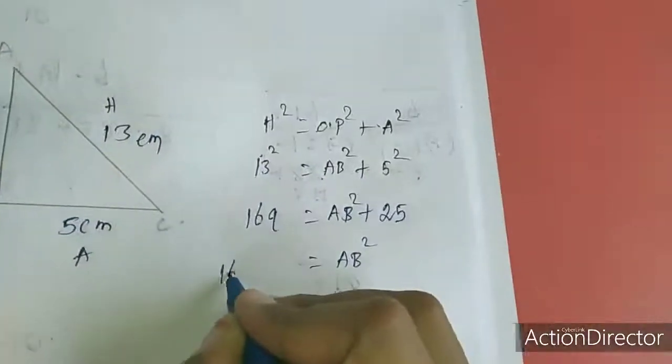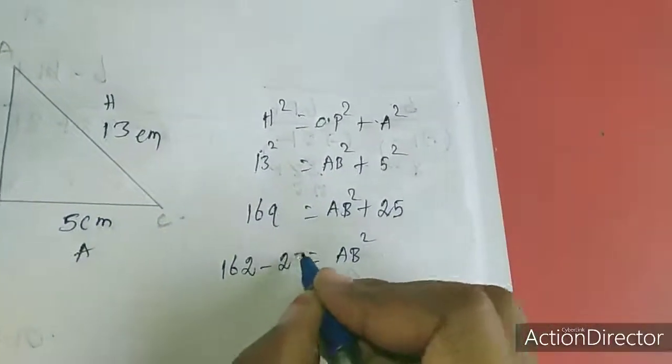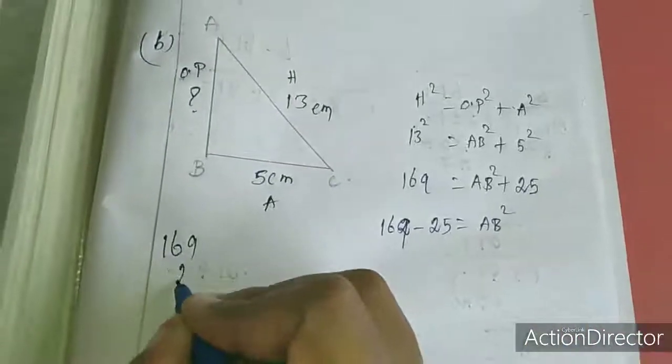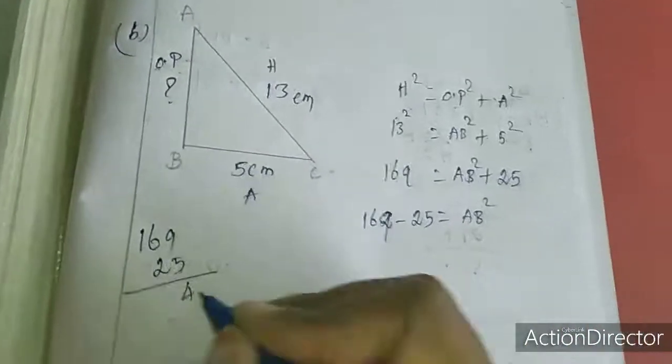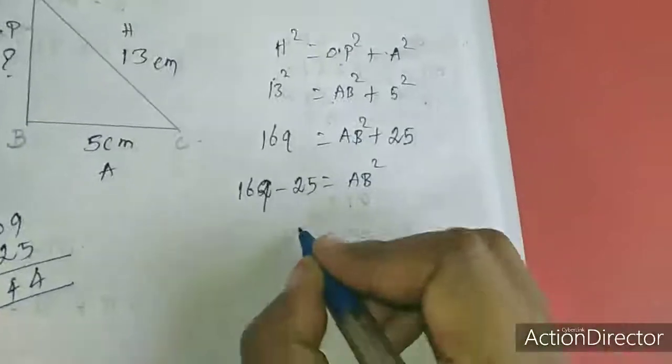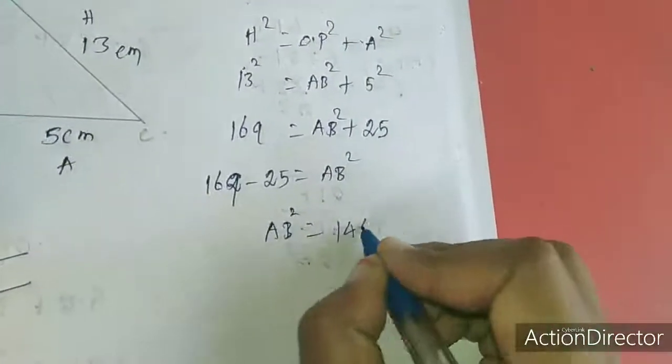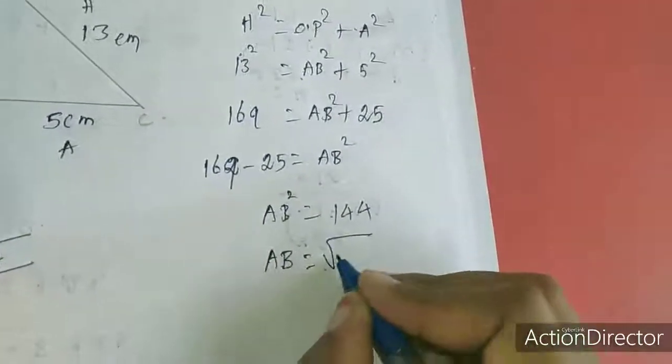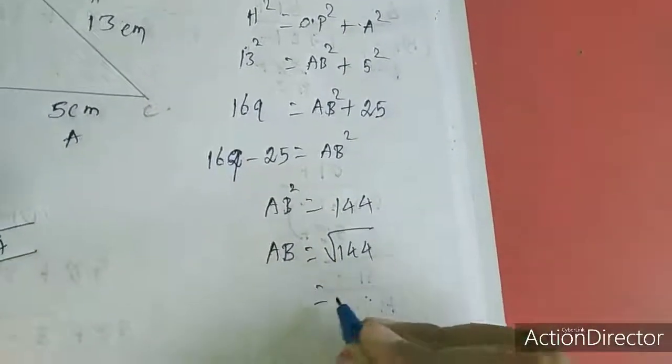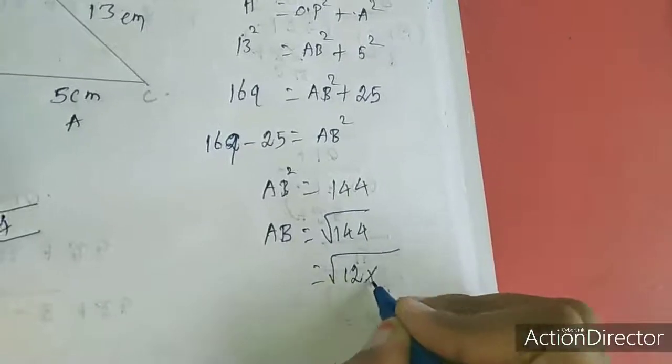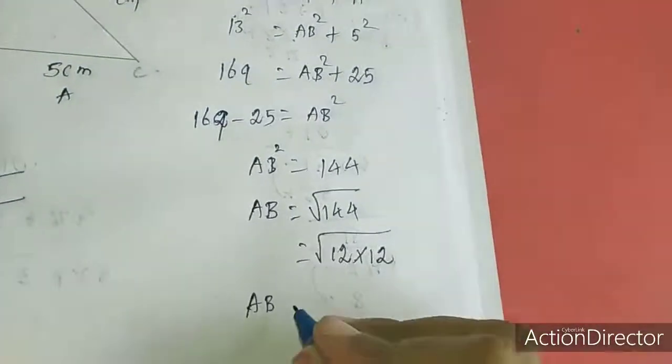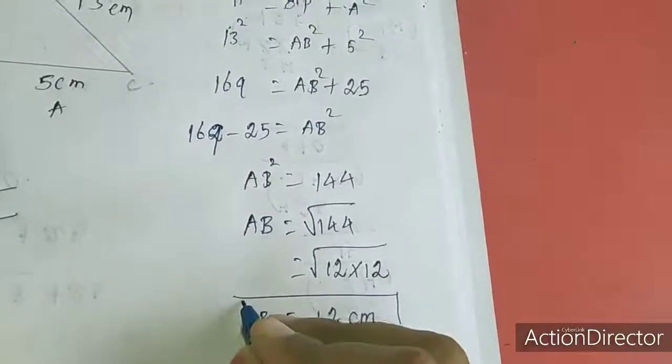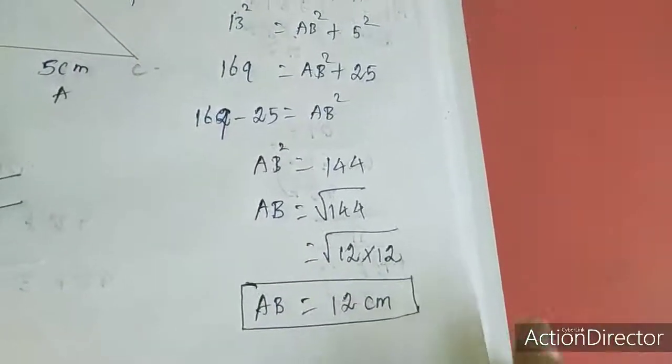So same formula only: hypotenuse squared equal to opposite squared plus adjacent squared. So hypotenuse is 13 squared, opposite we don't know. We need the AB value, AB squared only. So if the plus 25 comes this side means it will come minus 25. So here 9, subtraction, so 4, 4, 1. So AB squared equal to 144. We need AB equal to, if it is coming this side means square root. This one we can write in 12 into 12. AB equal to 12 cm. This is the answer for B sum.